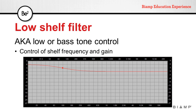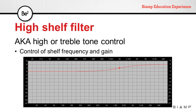A low shelf filter, also known as a low or bass tone control, can allow us to control the shelving frequency and gain. A high shelf filter, also known as a high or treble control, will give us the same control — shelf frequency and gain — allowing us to control the higher frequencies.